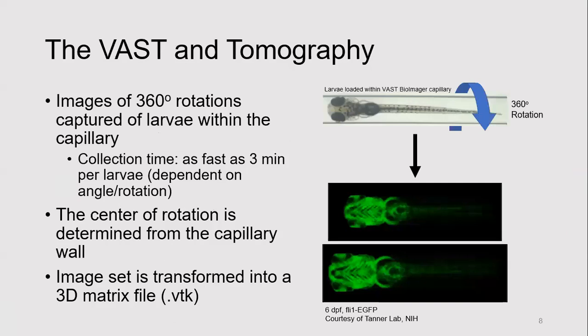Since the Vast Bio-Imager can automatically load, orient, and image zebrafish larva in a high throughput fashion, and combined with its rotational motors, we can collect a series of radial sections over a full 360-degree rotation. We can capture sections of the larva in as fast as three minutes per larva.